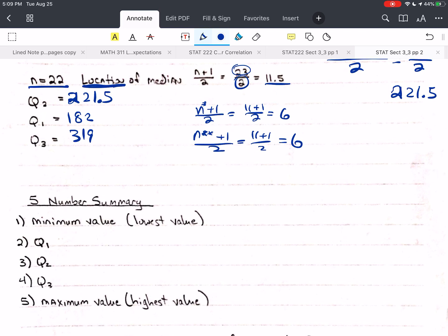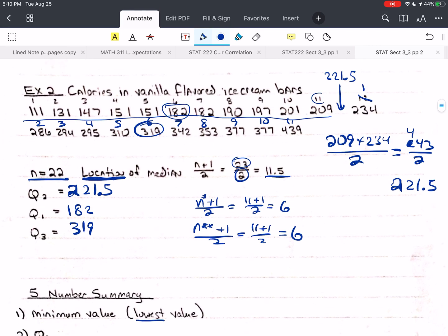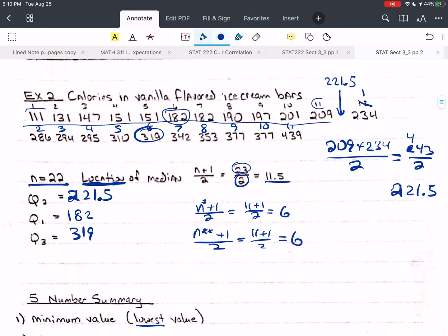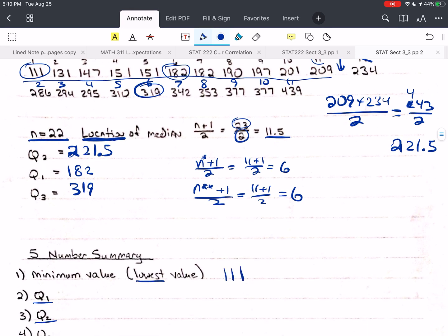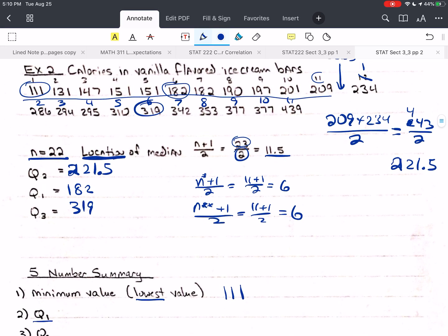Okay, but this doesn't require any distribution assumptions, and we'll learn about those later. So we're going to use the minimum or lowest value. We're going to use Q1, Q2, Q3, and the maximum value. So let's do that for our data set up above. The minimum value, if you put them in order, the minimum value is going to be the first one. That's 111.